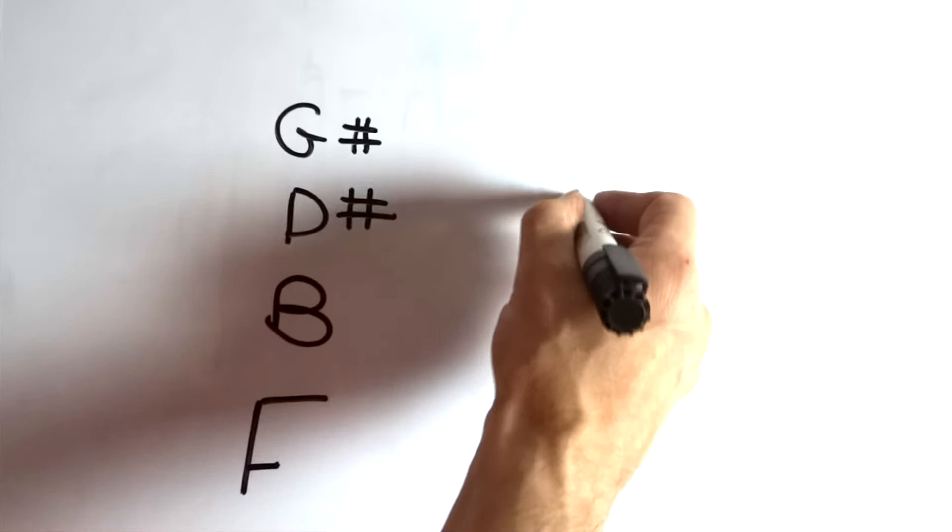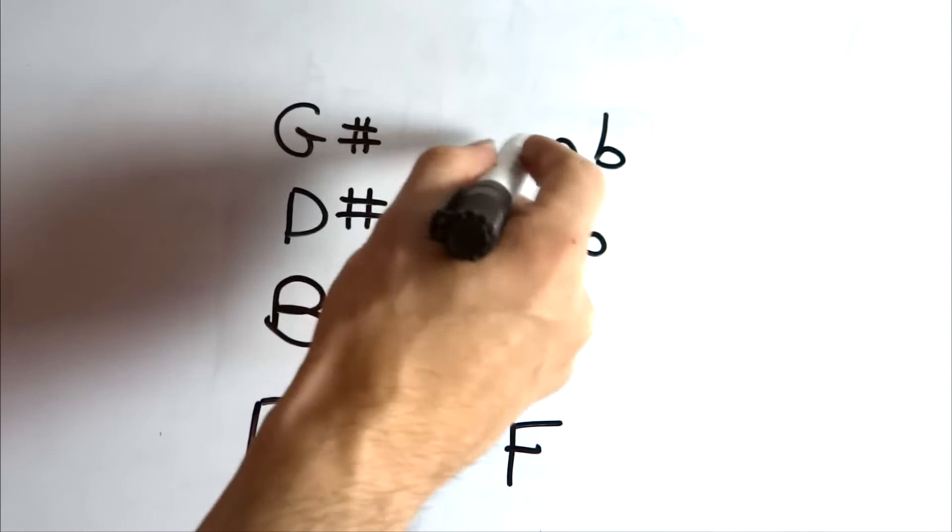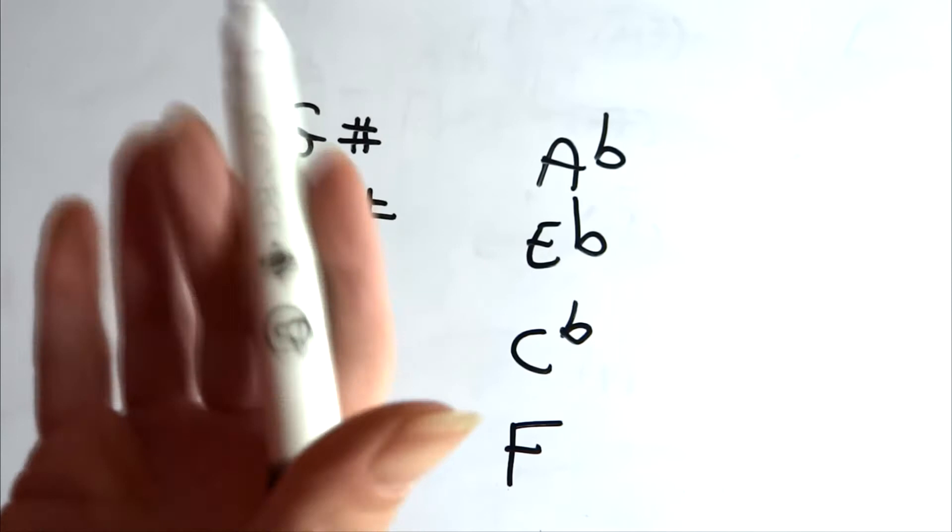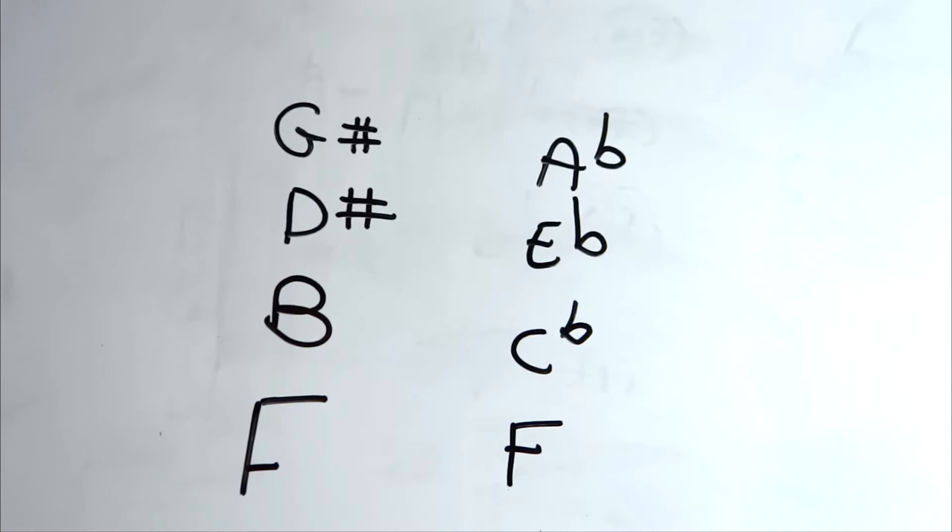Of course, now we've got an enharmonic equivalence there: G Sharp and A flat being the same pitch, the D sharp and the E flat sounding the same, the C flat and a B, and then obviously the F's the same. This one really is a minor 7 flat 5, functioning as, for instance, chord 7 in the key of G flat major.